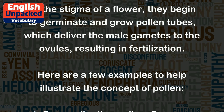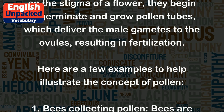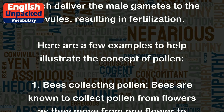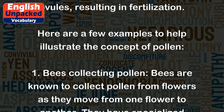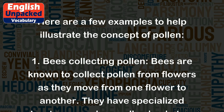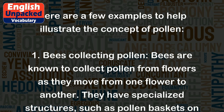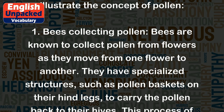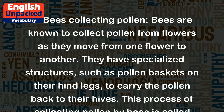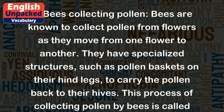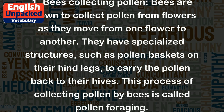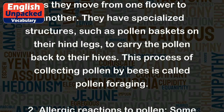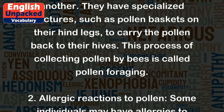Here are a few examples to help illustrate the concept of pollen. 1. Bees collecting pollen. Bees are known to collect pollen from flowers as they move from one flower to another. They have specialized structures, such as pollen baskets on their hind legs, to carry the pollen back to their hives. This process of collecting pollen by bees is called pollen foraging.